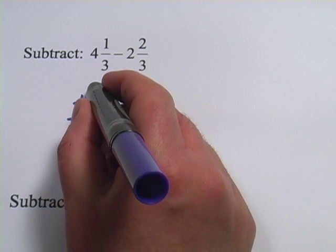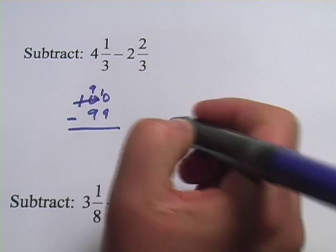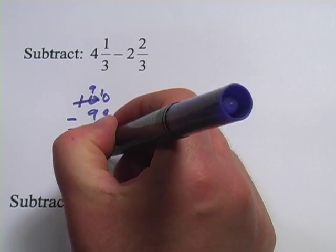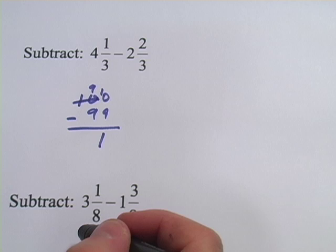So I'd take one from this ten and turn it into a nine and put the one up there. Now it's ten minus nine, which is one, and the nine minus nine is zero, so the answer is one.